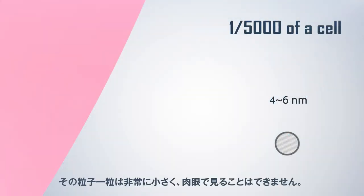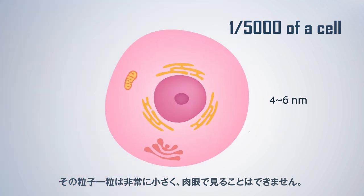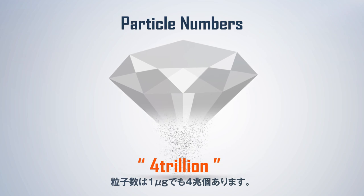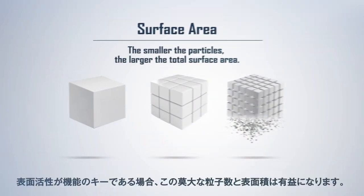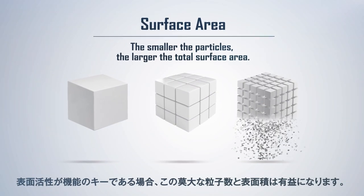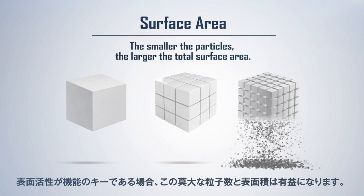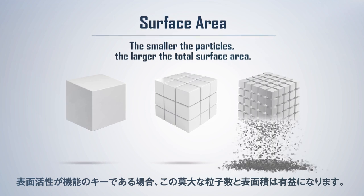The particles are extremely small and invisible to the naked eye. There are 4 trillion particles per microgram. The immense number of particles and the large surface area are beneficial for the functions in which surface activity plays a key role.